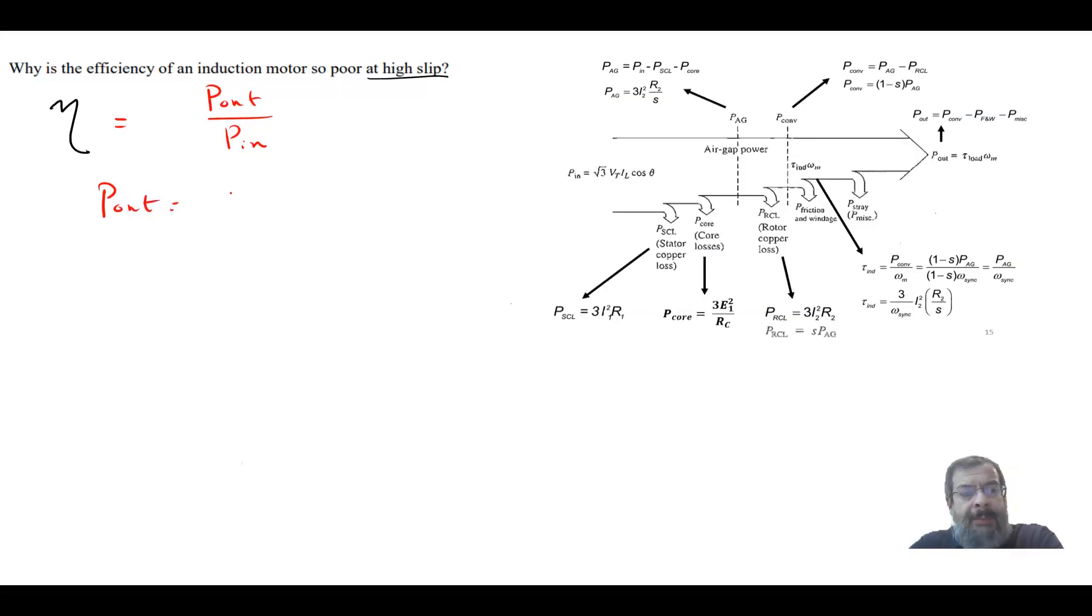P_out is equal to P_convert minus P_losses from the mechanical. So from this formula, this is your P_out. And P_convert is equal to (1 - s) times P_air_gap.